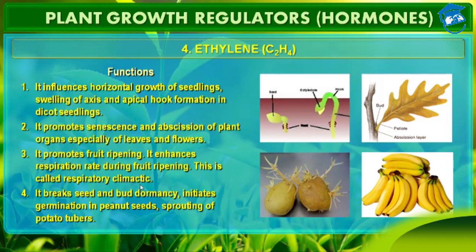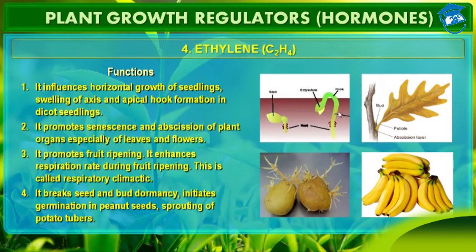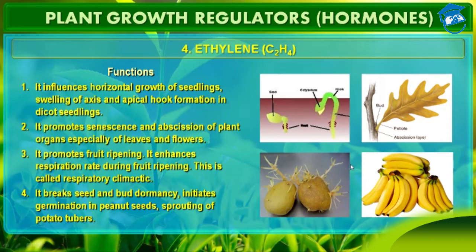Ethylene breaks seed and bud dormancy and initiates germination in peanut seeds. It helps in sprouting of potato tubers — ethylene is solely responsible for sprouting of potato tubers. When you add ethylene to a dormant seed, it breaks the dormancy and the seed grows. It also influences horizontal growth of seedlings, swelling of the axis, and apical hook formation in dicot seedlings.